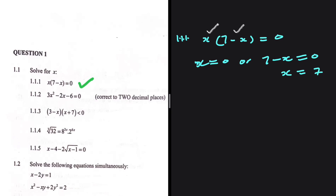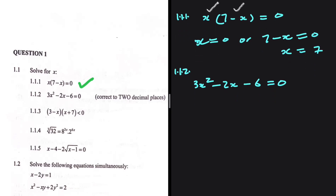For 1.1.2, we have a quadratic equation: 3x squared minus 2x minus 6 equals 0. We're supposed to find the value of x correct to two decimal places. As soon as we see 'correct to two decimal places,' we know we're going to use the quadratic formula.